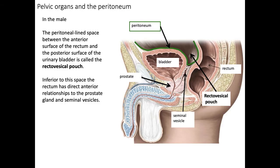And now for the male pelvis. There's no uterus in the male pelvis, so that changes some of the names. We only have a recto-vesicle pouch, which is between the rectum and the bladder. Infection can also easily spread here because of the close relationship between those organs.